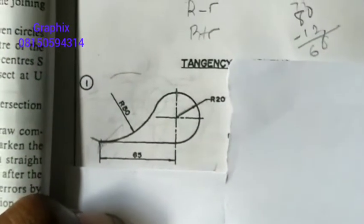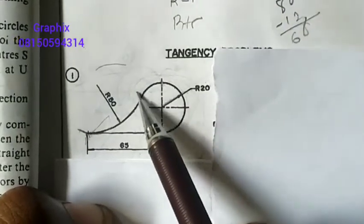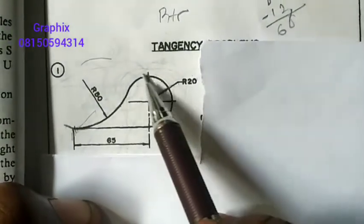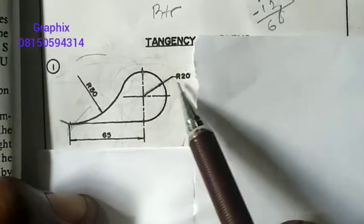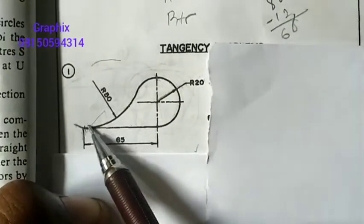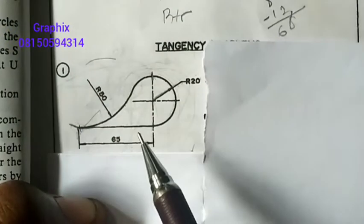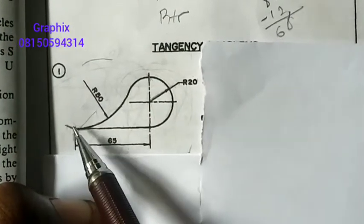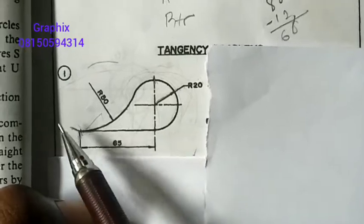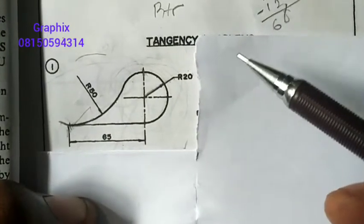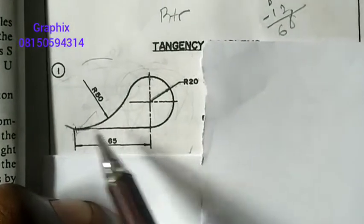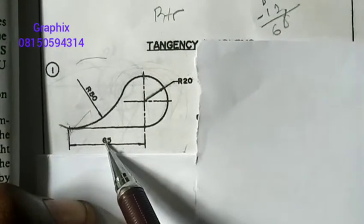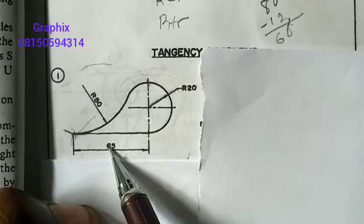Now let's take an example of this. Look at this question here. We have a circle that has a radius of 20 and a circle that has a radius of 50. The distance between these two circles from here to here is 65 millimeters apart.